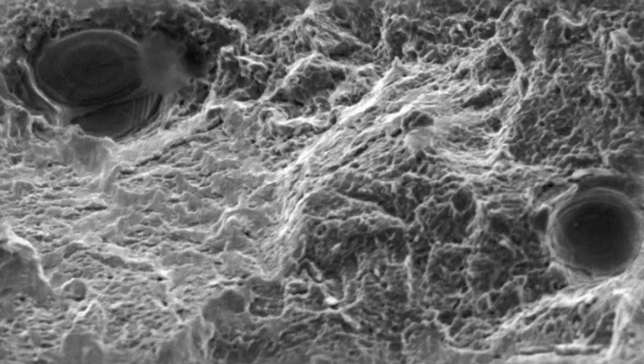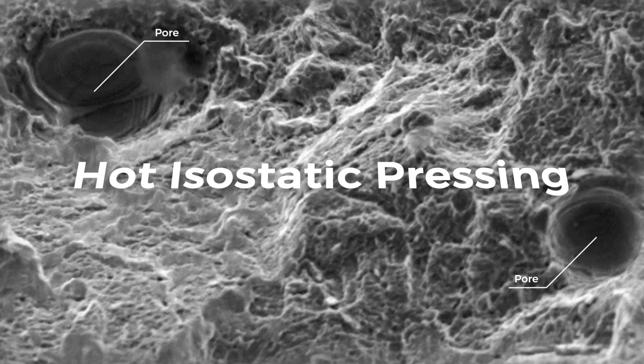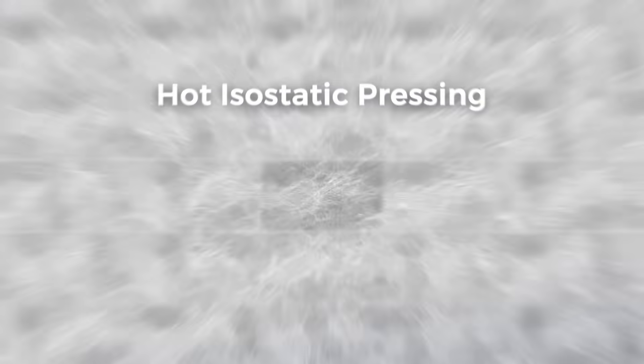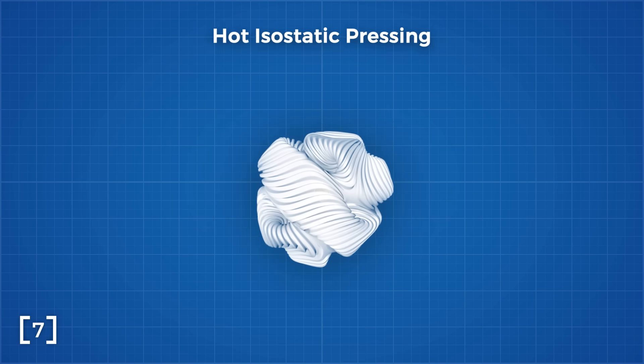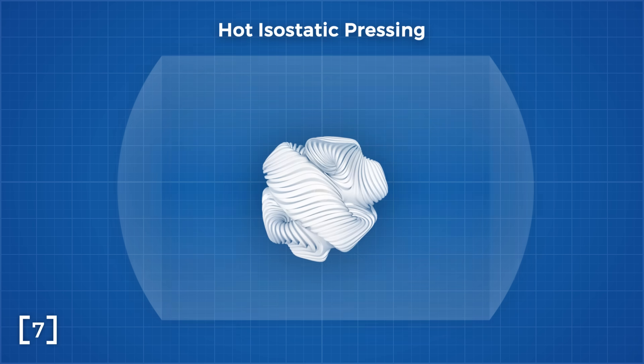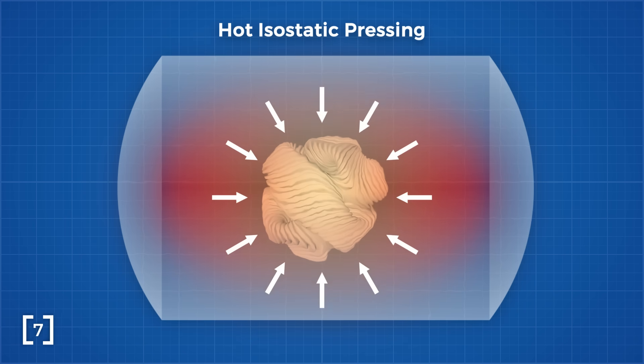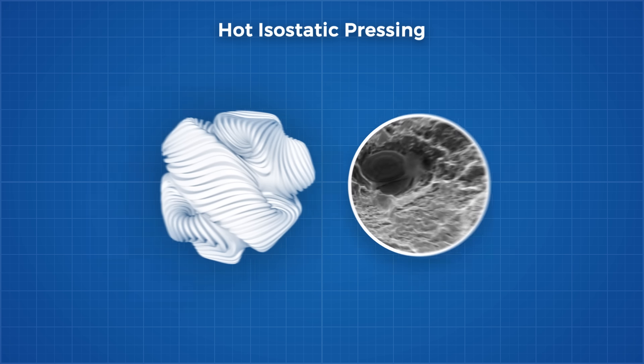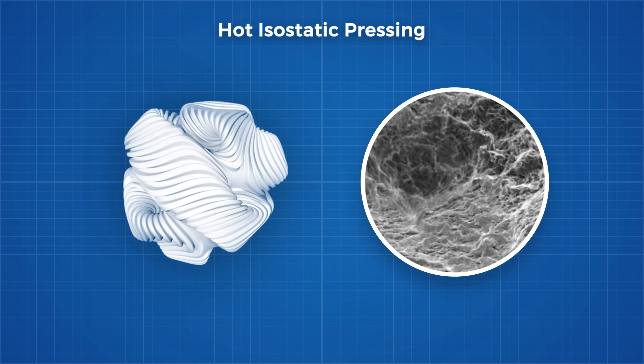For example, we can help close these pores by using a method called hot isostatic pressing, where we apply heat and very high isostatic pressure, which just means the pressure is the same in all directions. This maintains the overall parts shape, but compresses and heats the part up enough to close those pores to improve our fatigue strength, but not enough to compete with traditionally machined parts.